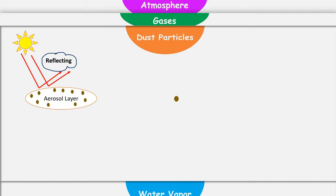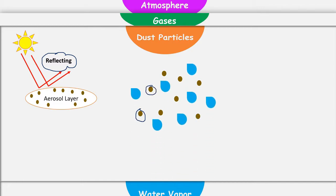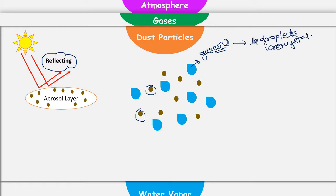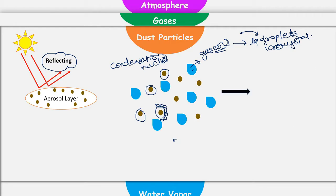The second role of dust particles is very important because they are actually helping water vapors to form clouds. Atmosphere contains a lot of dust particles. Apart from dust particles, atmosphere has got water vapors. These water vapors are in gaseous state. To convert them into liquid droplets and solid ice crystals, they need condensation nuclei. These dust particles are actually behaving as a nucleus or condensation nucleus. Around these dust particles, water vapors are getting condensed, and together dust particles and water vapors are forming clouds.